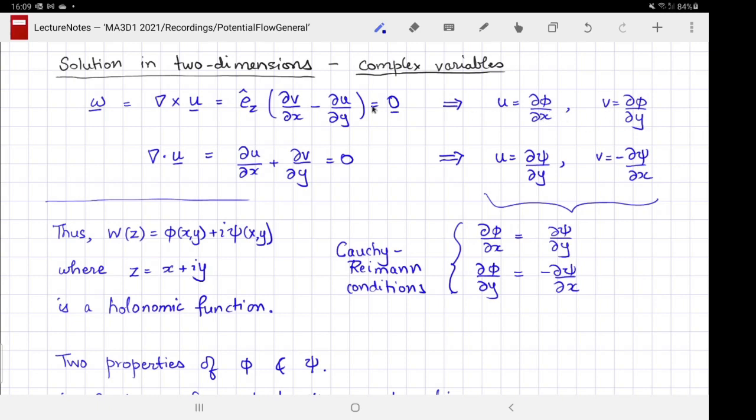I can define u to be the x derivative of some function. It so happens that this function is the same as our velocity potential phi, and v is the y derivative. If I plug this in to our expression for vorticity, you will see del v del x becomes the mixed second derivative of phi, del squared phi del x del y, and del u del y also becomes the mixed second derivative of phi. With the minus sign in between, the two cancel and I get zero trivially.